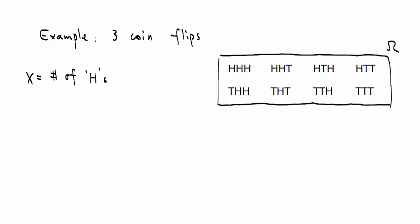Here is how we're going to label this sample space. We label this outcome as 3, this one as 2, 2, 1, 2, 1, 1, and 0. So in this case, the alphabet of X has four possible values: 0, 1, 2, 3.